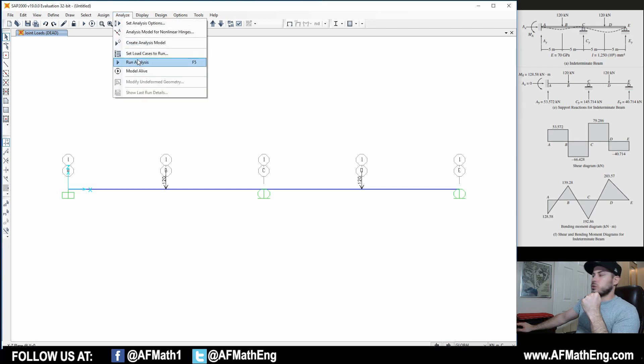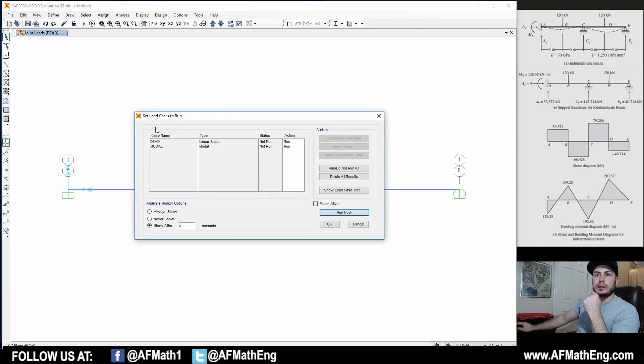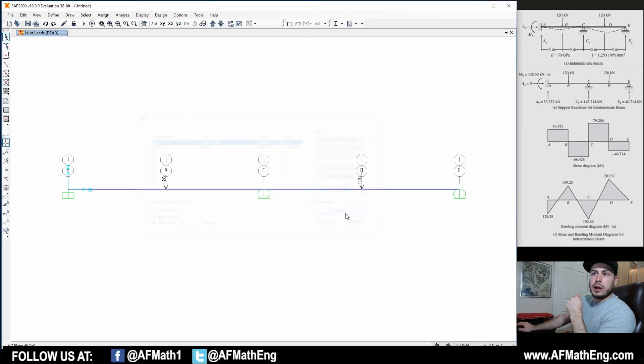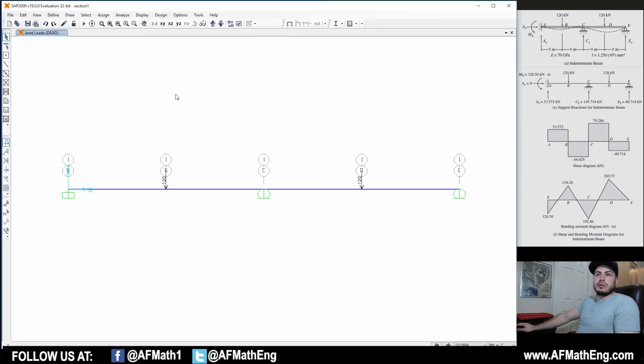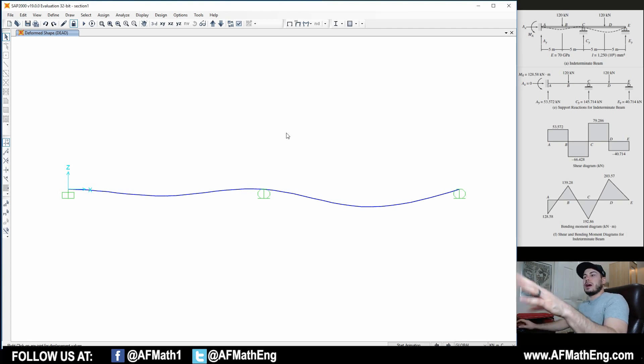Now we're ready to analyze this beam. Let's click on Analyze, go to Run Analysis. We're going to deselect modal - we don't want to run a modal analysis. We just want to run the dead linear static that we have for the beam. We're going to click run now. Let's save this as section one. Save. And now, as you can see, the section is now calculated and everything is calculated about this section.